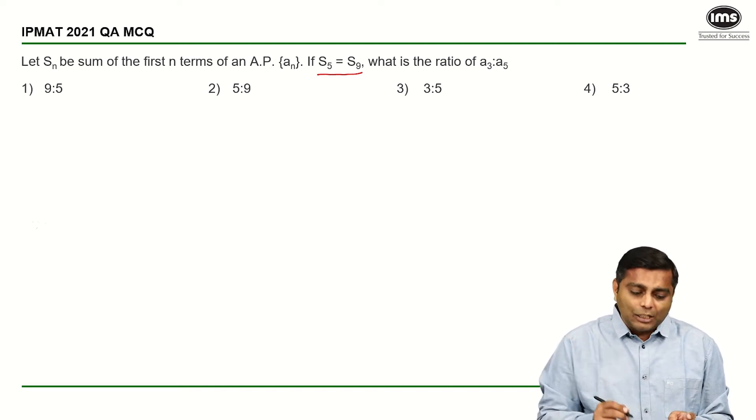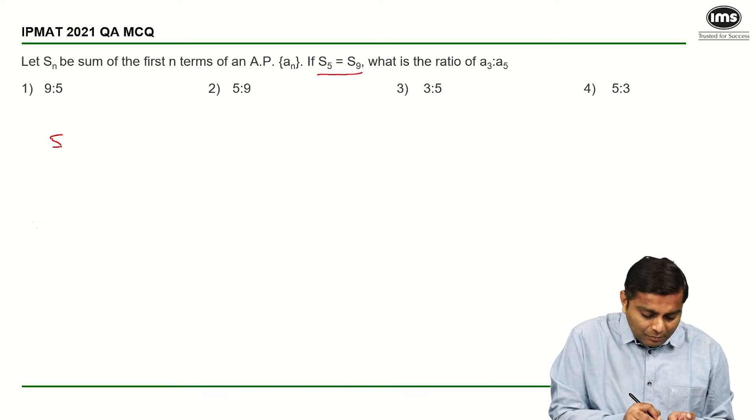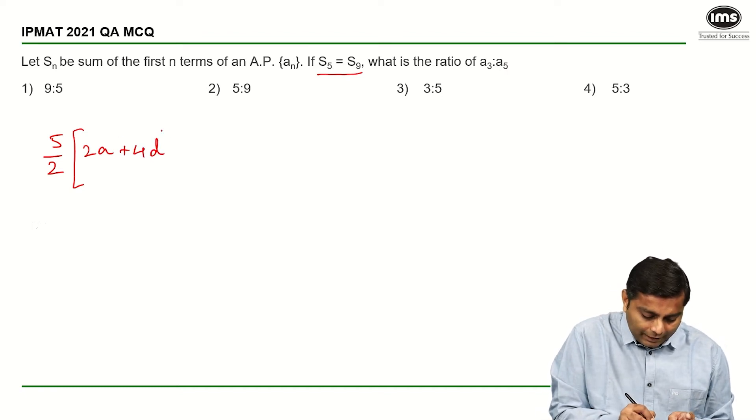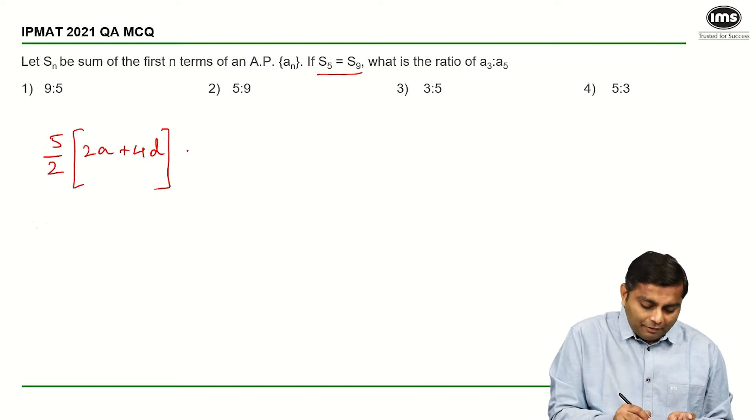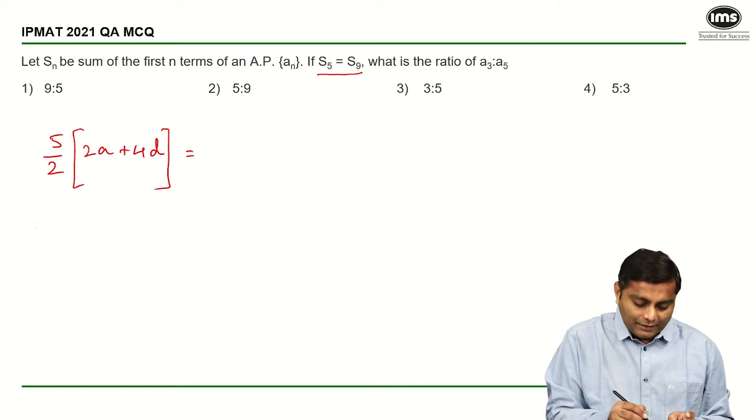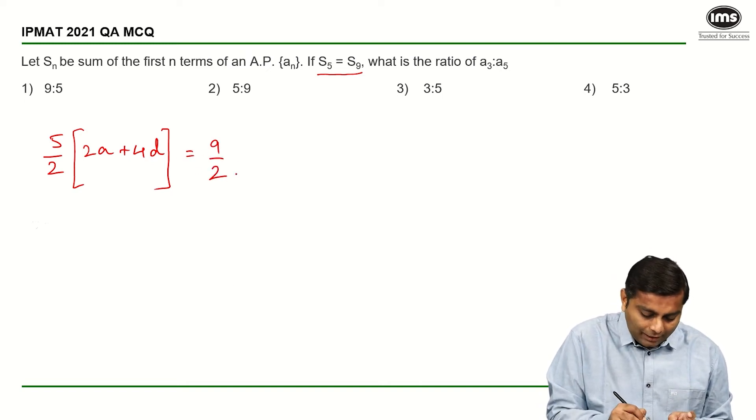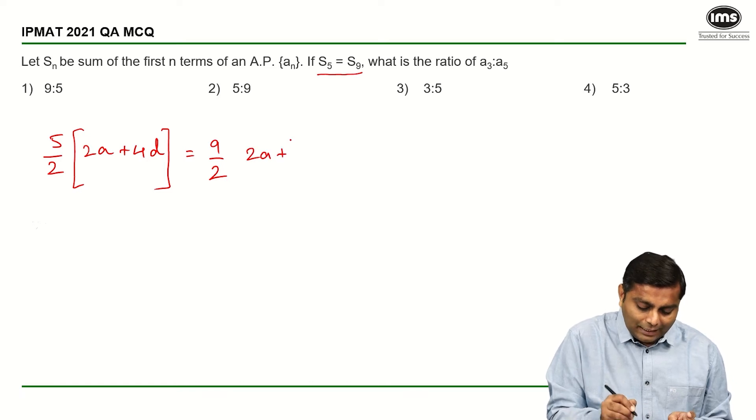I'm going to put the formula for Sₙ right now. For Sₙ when n is equal to 5, what does it give me? It gives me n by 2, so 5 by 2 times 2A plus n minus 1 times D. So it is 2A plus 4D. This is my S₅. Now, they have said this is equal to S₉ which is again going to be 9 by 2 times 2A plus 9 minus 1, 8 times D.